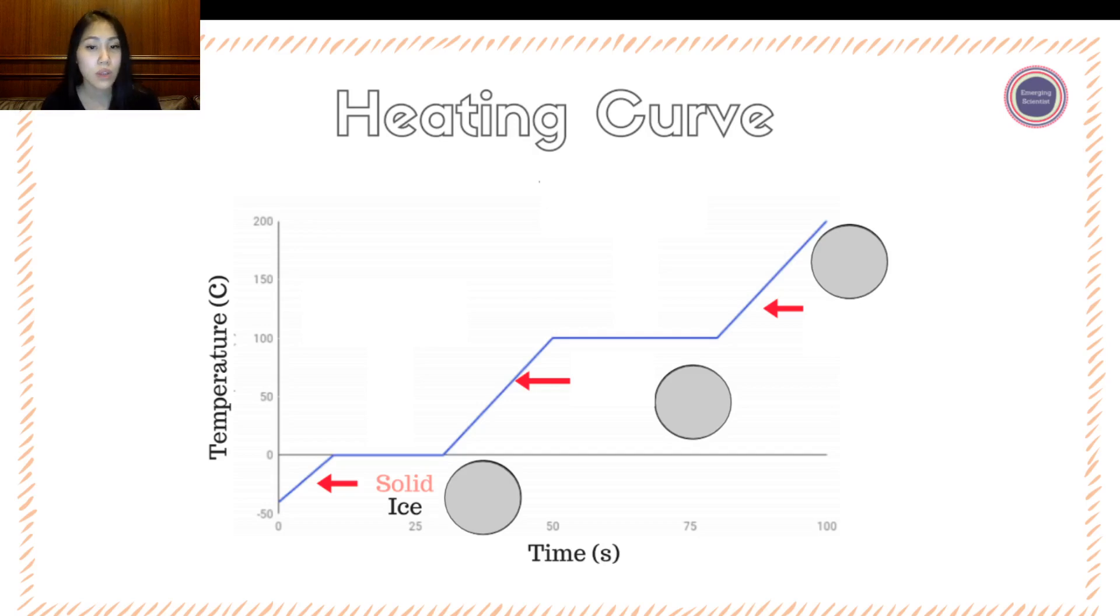The next piece is the liquid state. The liquid state is going from zero degrees to 100 degrees, and that's the water form. The next state is the gaseous state, and that's steam, as an example. So when we're boiling water, when it goes above 100 degrees Celsius, that steam is going to be formed in the gaseous state.